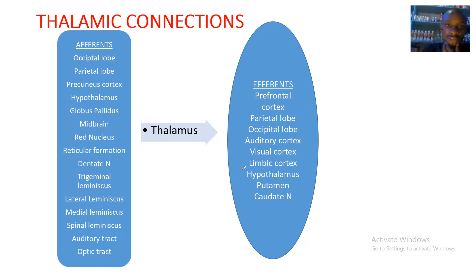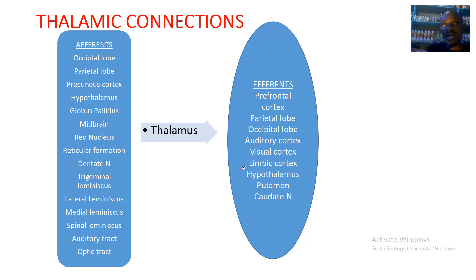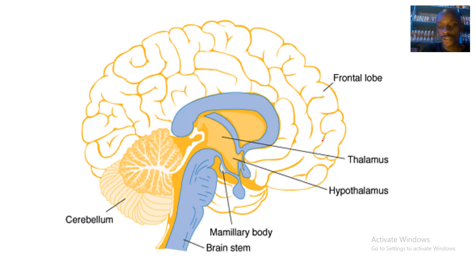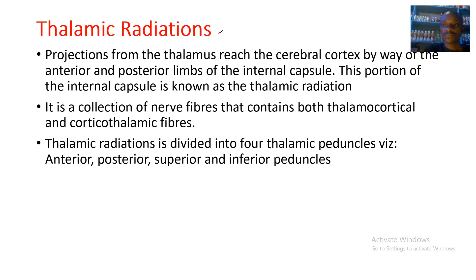These are the thalamic connections — the afferent connections of the thalamus and the efferents. Afferents are fibers coming to the thalamus; efferents are fibers the thalamus sends out to other regions. This is shown in the table, and this is a gross picture of the brain showing where the thalamus is located.